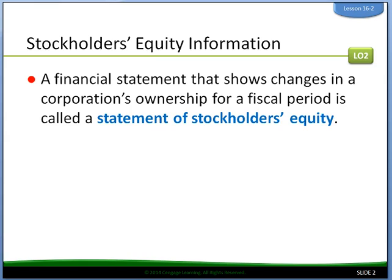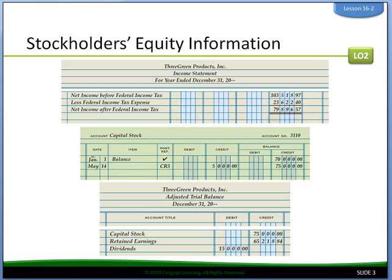Also, the current year's adjusted trial balance provides the current balances of other capital accounts. So for a statement of stockholders equity, we've got the income statement, the capital stock account, and the trial balance — these are the three things we pull in to do the statement of stockholders equity.